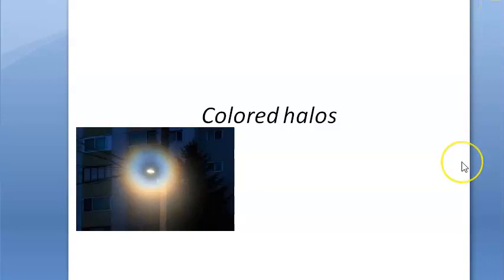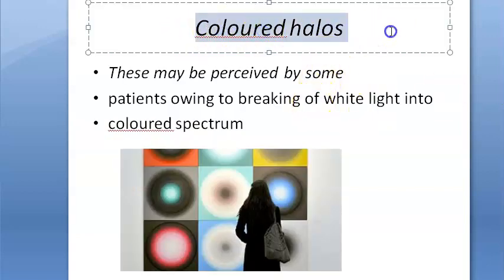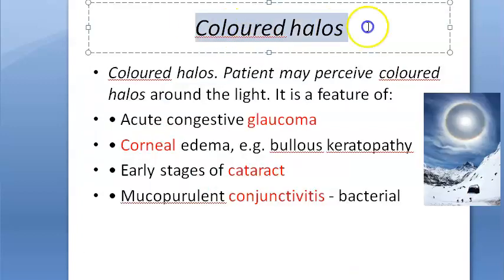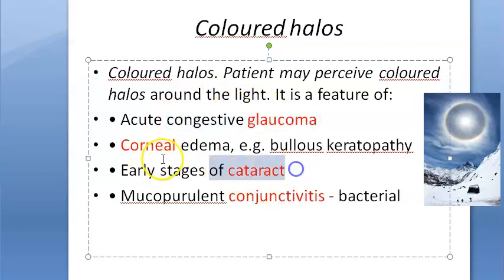In this video we look at colored halos. A colored halo is a symptom — the patient is seeing white light that breaks up into a colored spectrum. It is perceived by the patient; it's not something you observe externally. Colored halos can occur because of glaucoma, cataract, corneal edema, and conjunctivitis.